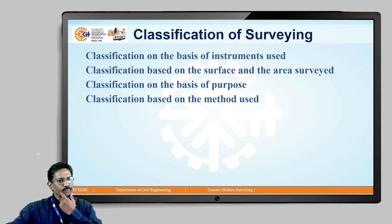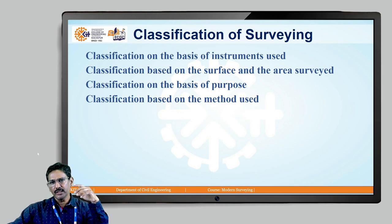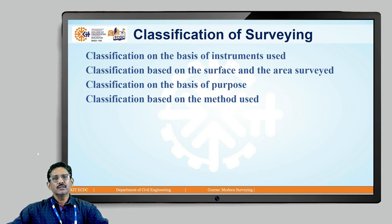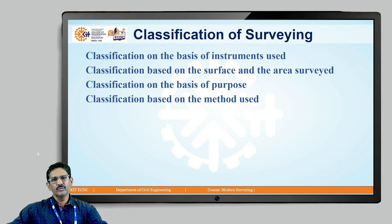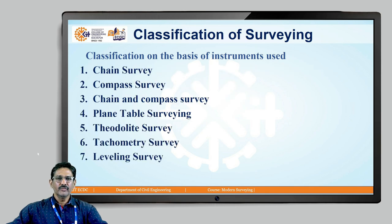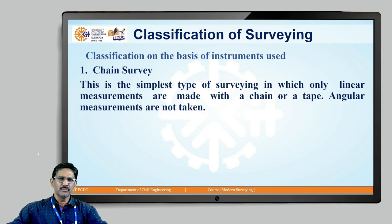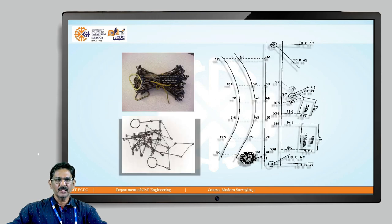Beyond the two major classifications of plane and geodetic surveying, we can further classify surveying based on the instruments used, the surface and area being surveyed, the purpose for which it is used, and the method used. Based on instruments: chain, compass, chain and compass, plane table, theodolite, tachymeter, and special levelling instruments are used. Chain survey is the simplest form of survey where a chain — made of metal links or rings — is a substitute for a measuring tape and is used for measuring distances on the ground.